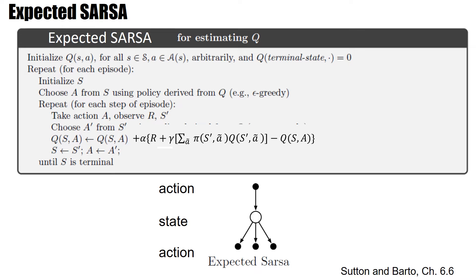The first variation is called Expected SARSA. Normally in SARSA, we take an action, we observe the reward, we observe the next state S' and then we pick the next action A', and then we update with that actual action.